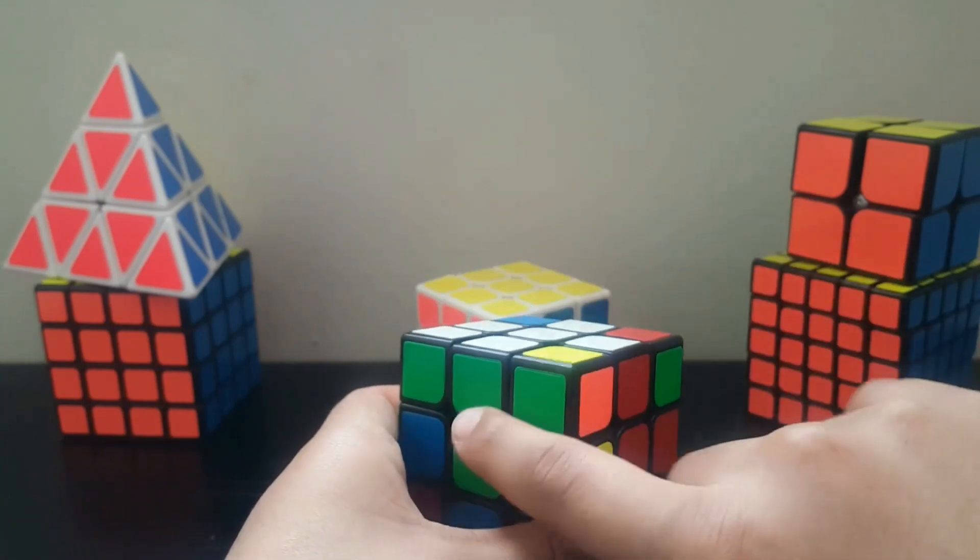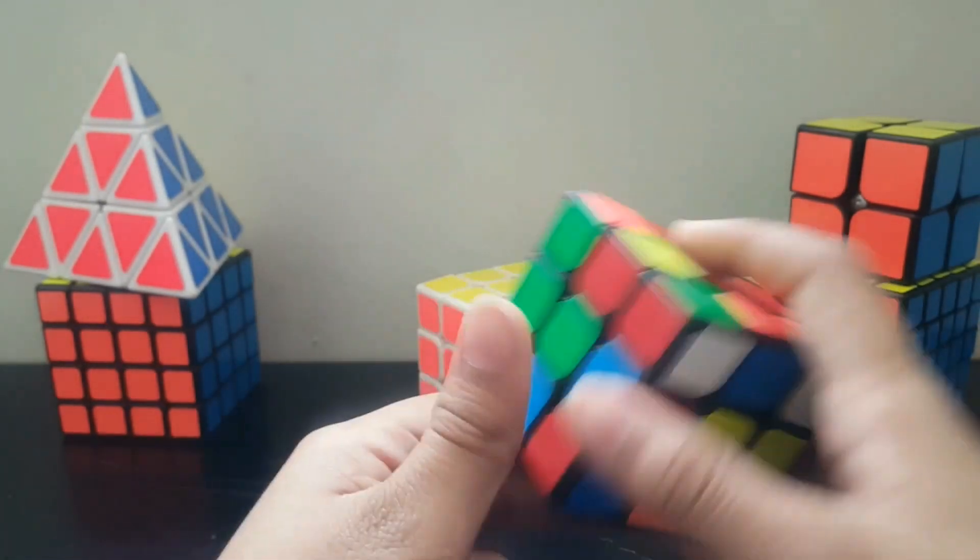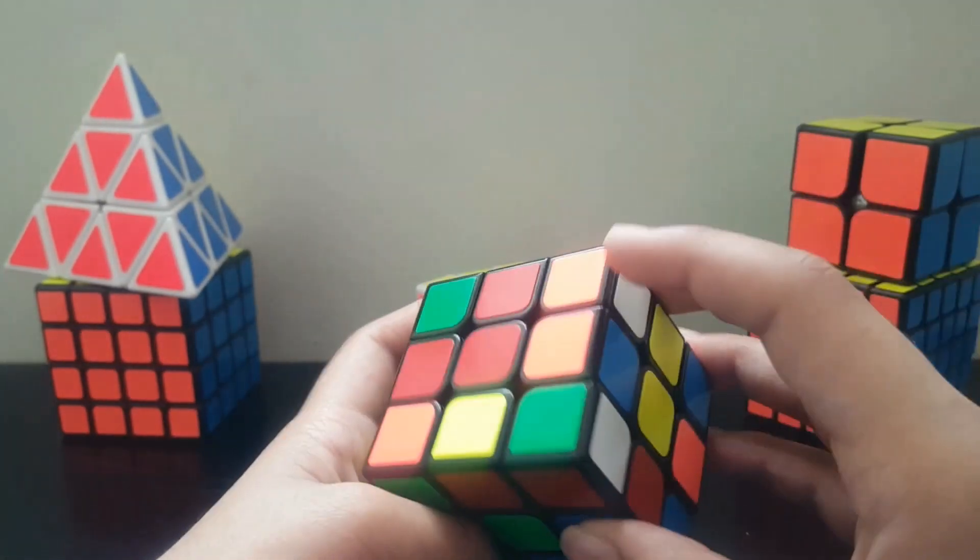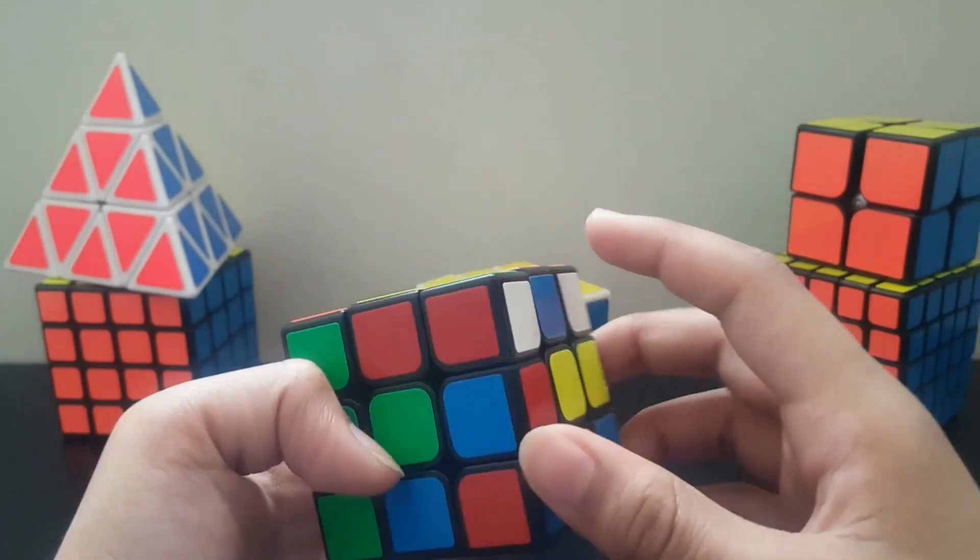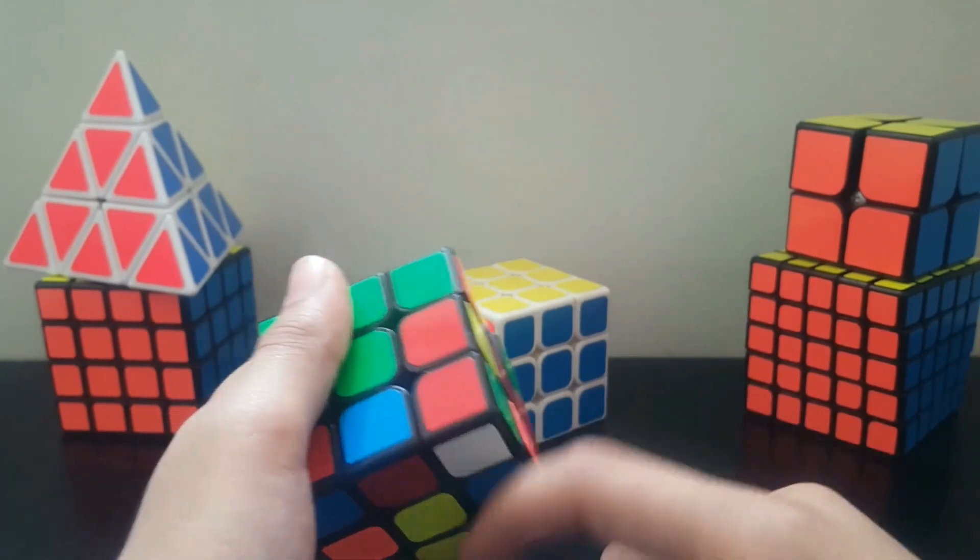So now I am going to solve white, green and red. So I have to find the corner piece of that color. So now I have found that corner piece. So what we have to do is, if it is facing towards down, then we have to bring it like this...